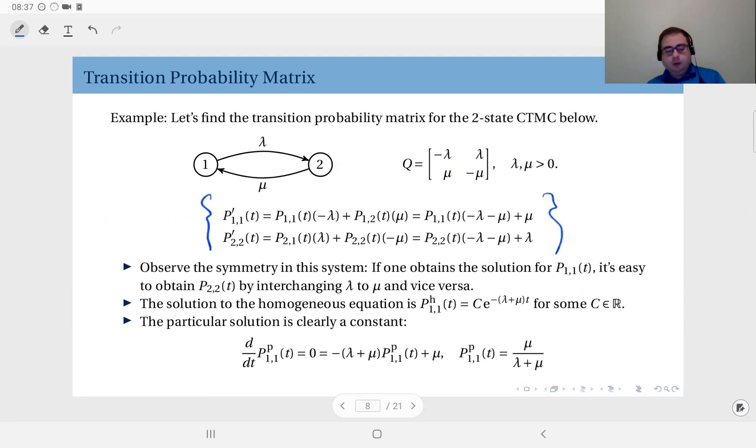But one further remark here is the symmetry in the system. Symmetry in the sense that lambda and mu, their roles with respect to the state transition from 1 to 2 and 2 to 1 are symmetrical. What does it mean? It means that if one obtains the solution for P11, it's easy to obtain P22 by interchanging lambda and mu and vice versa.